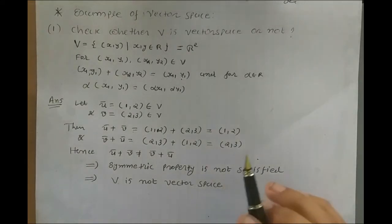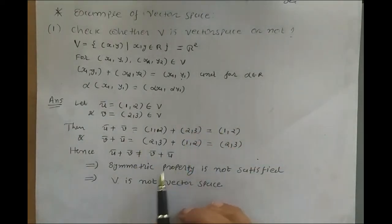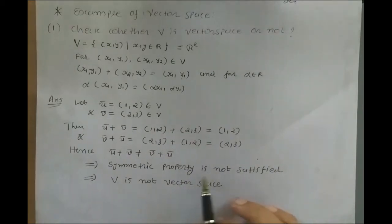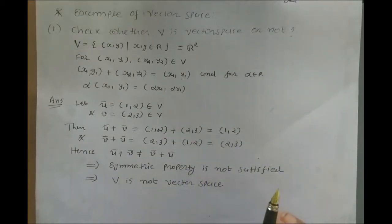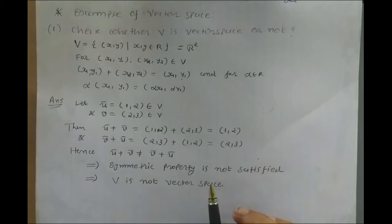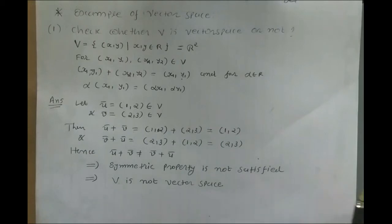To be a vector space, all properties in the definition must be satisfied. If any one of these properties is not satisfied, then the given set is not a vector space with the given binary operation. However, if we change the binary operation, it may be possible that V becomes a vector space.